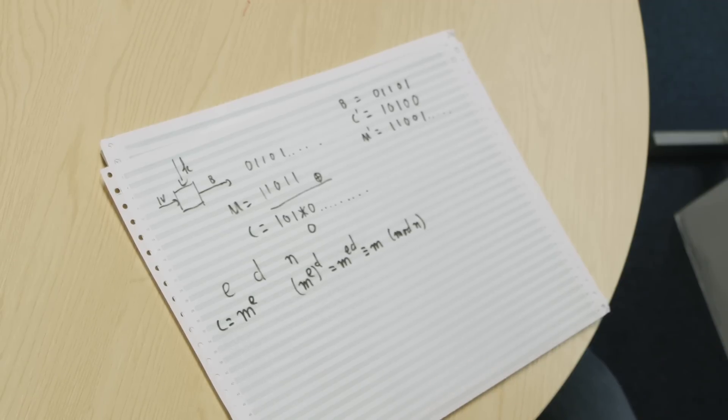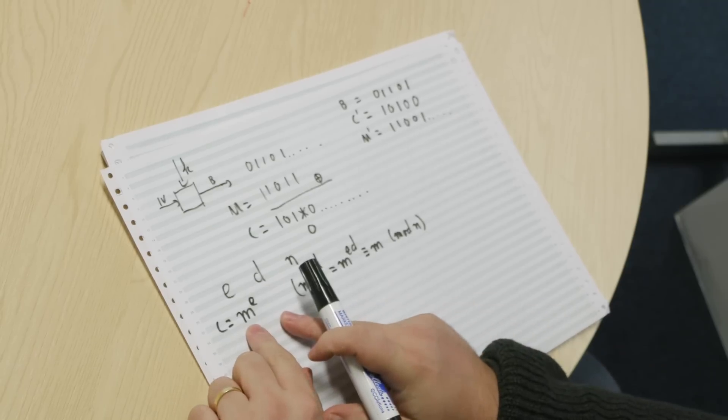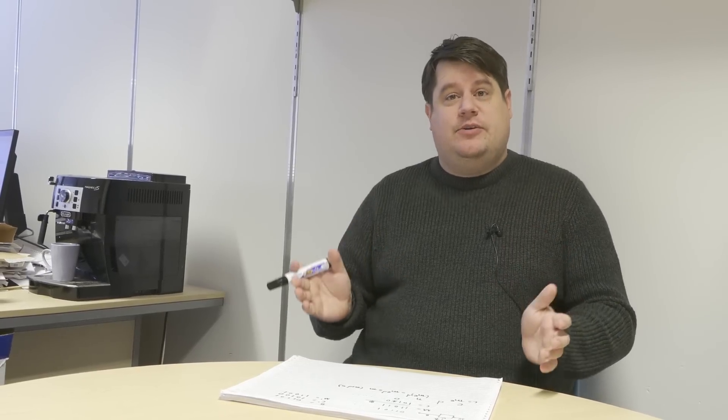So in other words, if you send me m to the power e, this is actually also modulo n, if you send me m to the power e mod n and I take that value and I raise it to the power d, I get the original value back and I'm the only person in the whole world who knows d, so I'm the only one who can decrypt it.